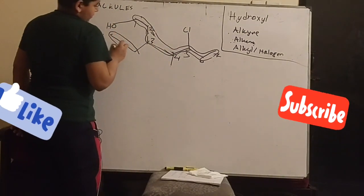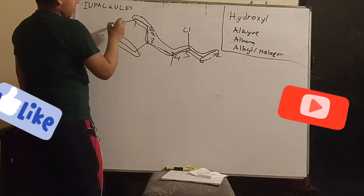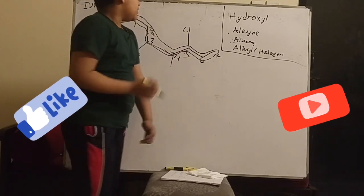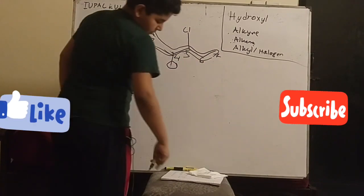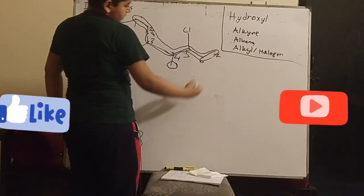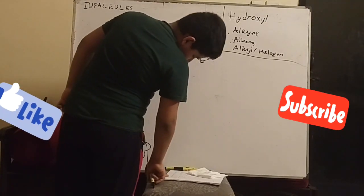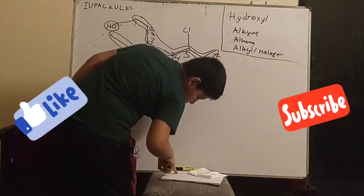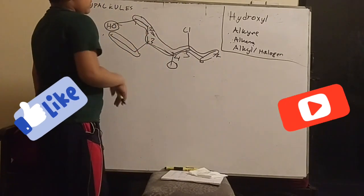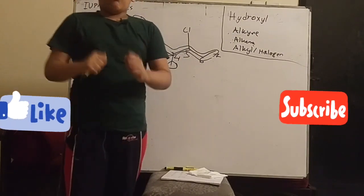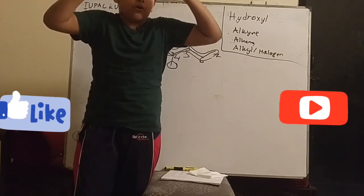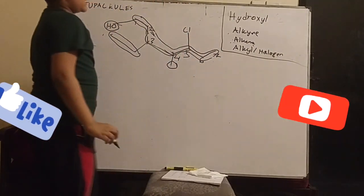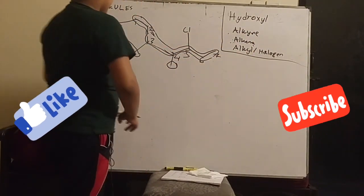And we have this butyl here, which is an alkyl substituent. We have this hydroxyl substituent, which is an alcohol. The methyl, which is also alkyl, and the heptene molecule. And there's also a double bond here. That's why IUPAC has a list of which one takes higher priority. The hydroxyl takes the higher priority.